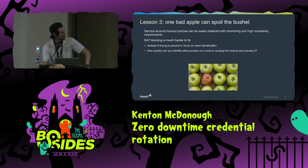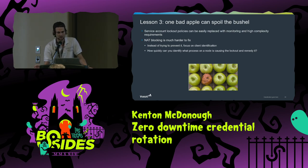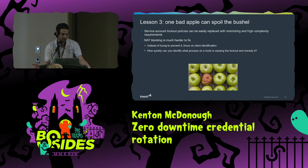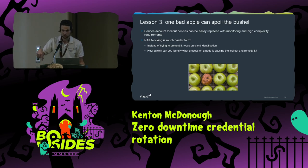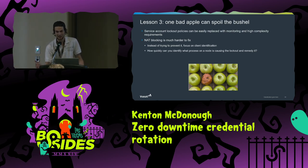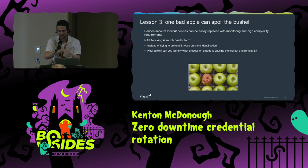The lesson: one bad apple can spoil your bushel. Service account lockout policies can be replaced by monitoring and high complexity requirements. If you treat service accounts like human users, you're probably doing something wrong. The NAT blocking problem is harder to fix — in many places we don't have anything better than a client IP. Ask yourself: if your WAF alerts that an internal IP is blocked, how quickly can you figure out which pod on that node is causing the problem? On Kubernetes, you have to reverse your way through a NAT to find the pod IP, then check pod logs. It takes forever.